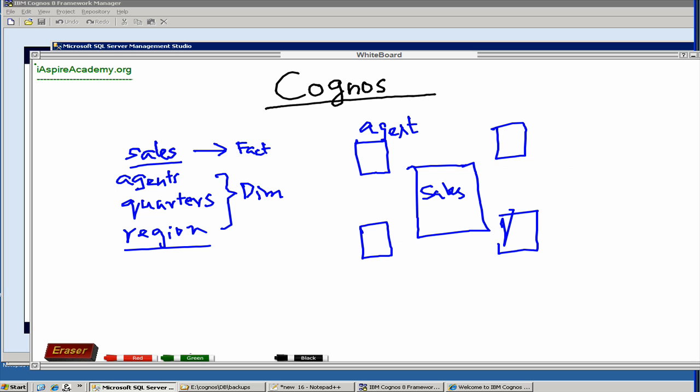Okay. So we have sales, agents. We have quarter. We have region.